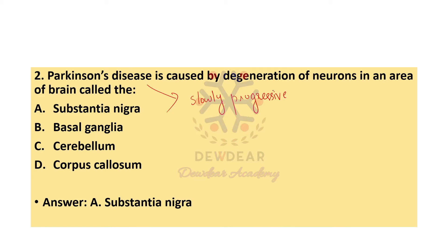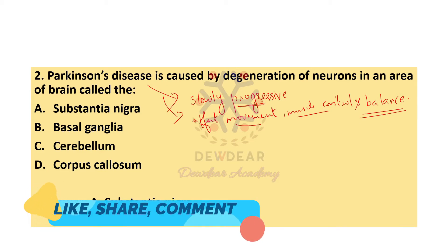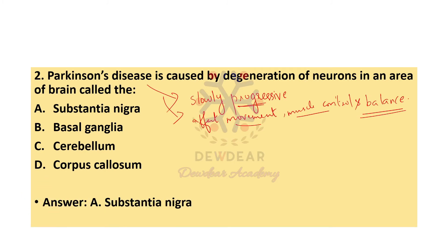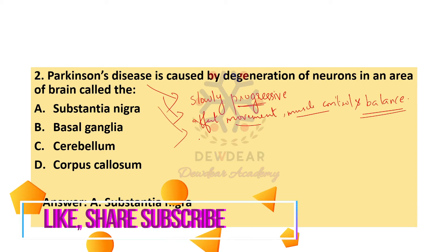Parkinson's disease is a slowly progressive disorder mainly affecting movement, muscle control, and balance. What happens is that cells are destroyed in a certain part of the brainstem — those cells are known as the substantia nigra.